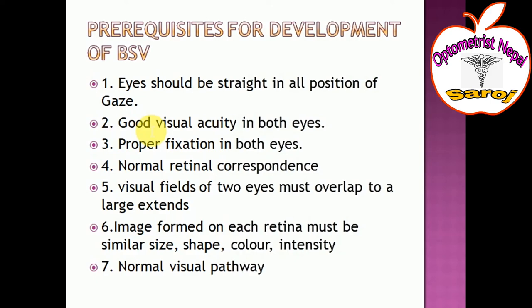The third prerequisite is proper fixation in both eyes. The fourth prerequisite is normal retinal correspondence — normal retinal correspondence must be equal in both eyes, left and right, so that binocular single vision can develop.